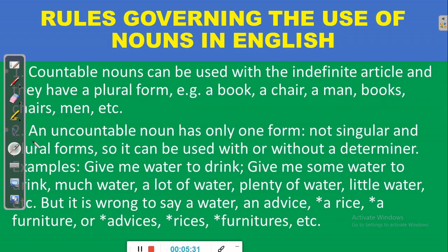Rule number two: an uncountable noun has only one form — no singular, no plural — so it can be used with or without a determiner. When we talk of uncountable nouns, they refer to things we cannot count. One example is water; you cannot count water one by one, so you cannot say 'one water' or 'two waters.' You can use it without a determiner — 'give me water to drink' — or with a determiner — 'give me some water to drink.'